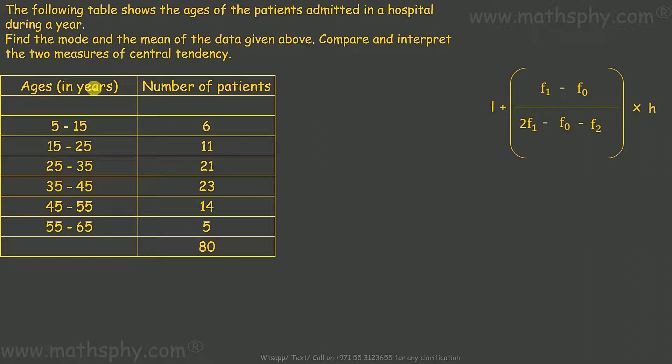Now looking at this data, we can easily see the age between 35 to 45 has the maximum number of patients, 23. Comparing other patients: this age is 6, this age is 11, this age is 21, this age is 14, and this age is 5. But age from 35 to 45 we have maximum number of patients.